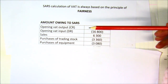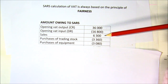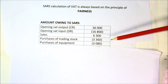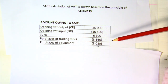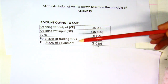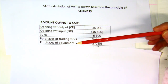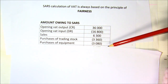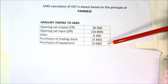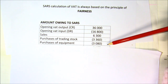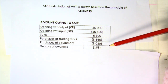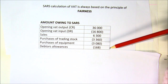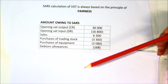Your input VAT is not only on your trading stock — it's on any items that you need to run your business. So if you're buying equipment for the business, you could also claim that VAT back, which will also reduce the amount that you owe SARS.